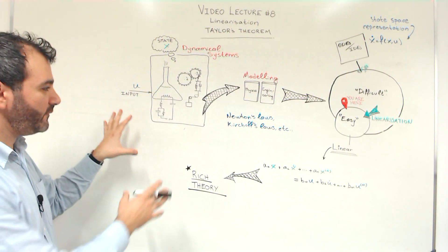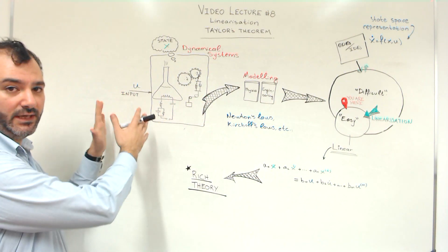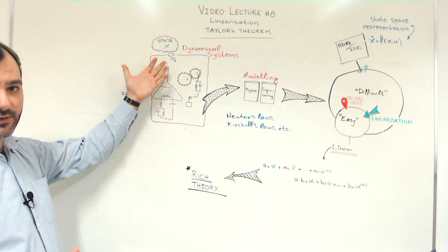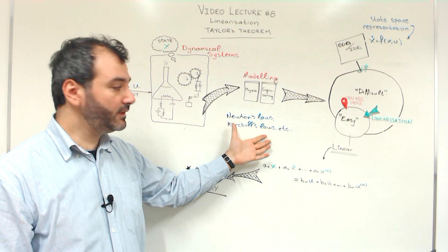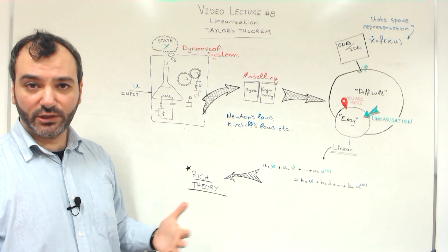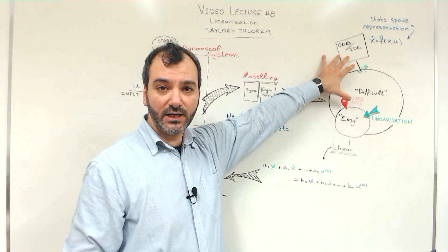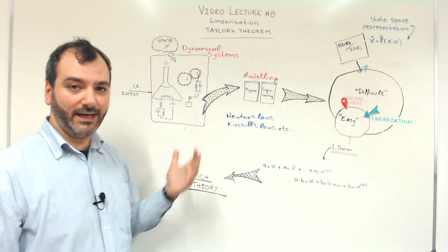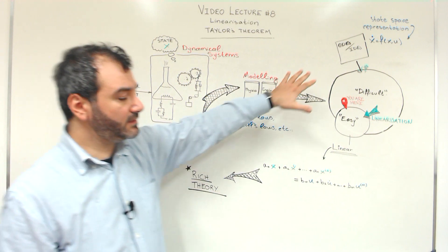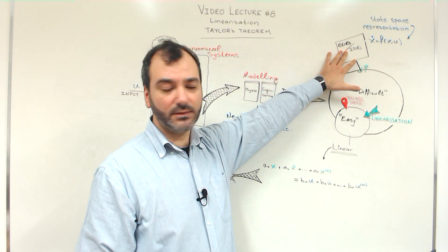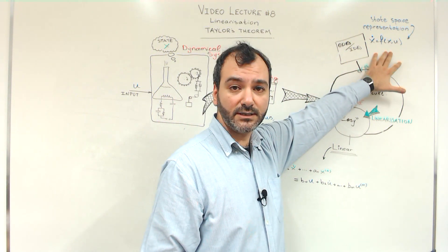So far we have been doing the following procedure. We are given a dynamical system which has certain input variables u and state variables x. Then using fundamental principles of science and engineering such as Newton's laws, Kirchhoff's laws, Hooke's law and so on, we are able to derive differential equations that describe the dynamic relationship between input and state variables. These differential equations, or sometimes integral differential equations, can be written in a state space representation.